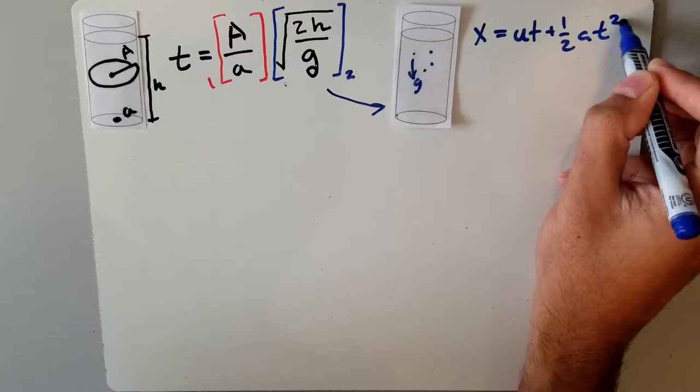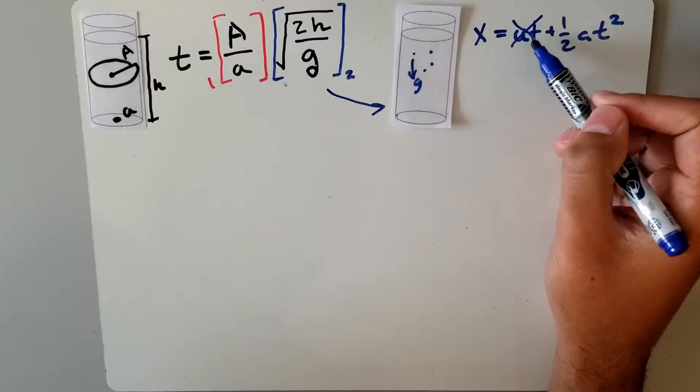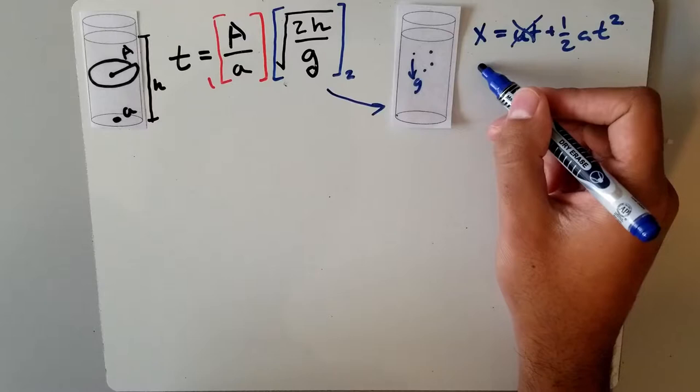Since at the beginning of the situation, the water will be still, we can get rid of this first part since the initial velocity will be equal to zero. This gives us x equals one half a t squared.